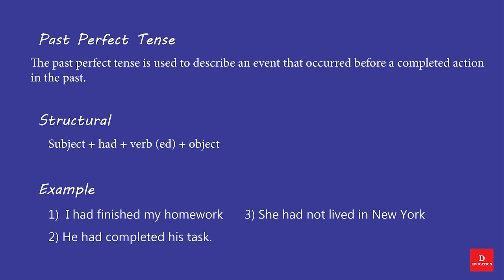Past Perfect Tense. The Past Perfect Tense is used to describe an event that occurred before a completed action in the past. Structure: Subject + had + Verb (past participle) + Object. Examples: I had finished my homework. He had completed his task. She had not lived in New York.